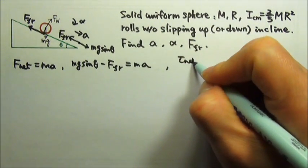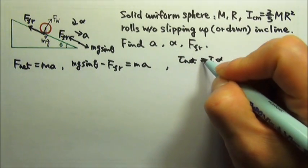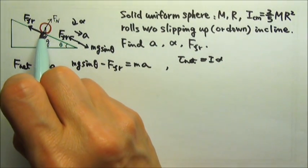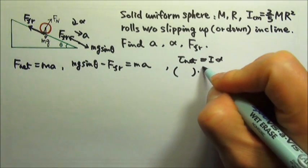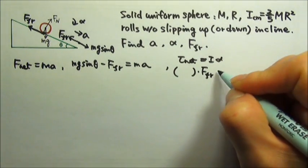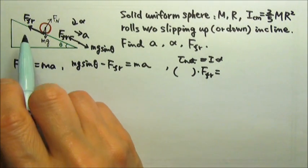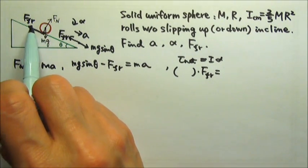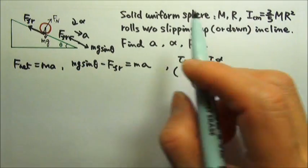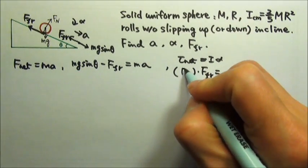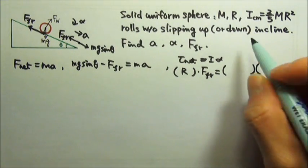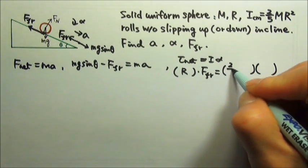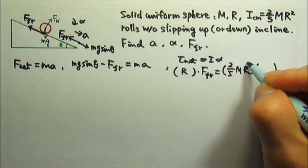The net torque equals to I alpha. The torque is produced by the friction, and the torque is lever arm times the force. And what is the lever arm for friction? It's the distance between the line of force and the axis. It is the radius of the sphere, r. And this equals to I alpha, the I is 2 fifths mr squared.